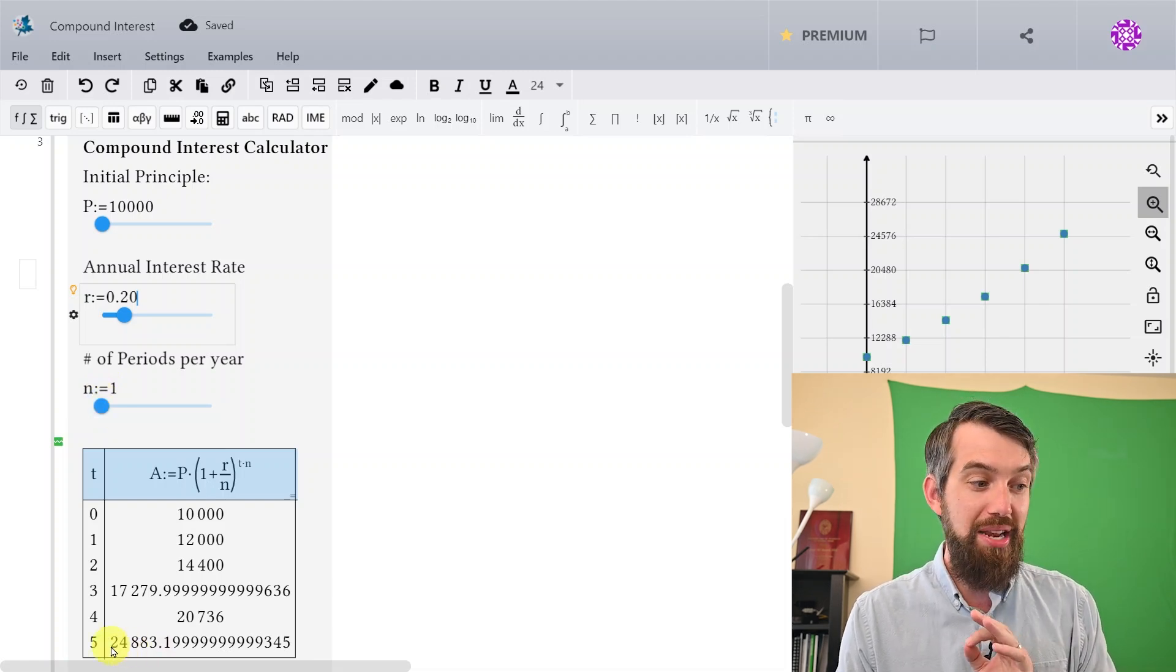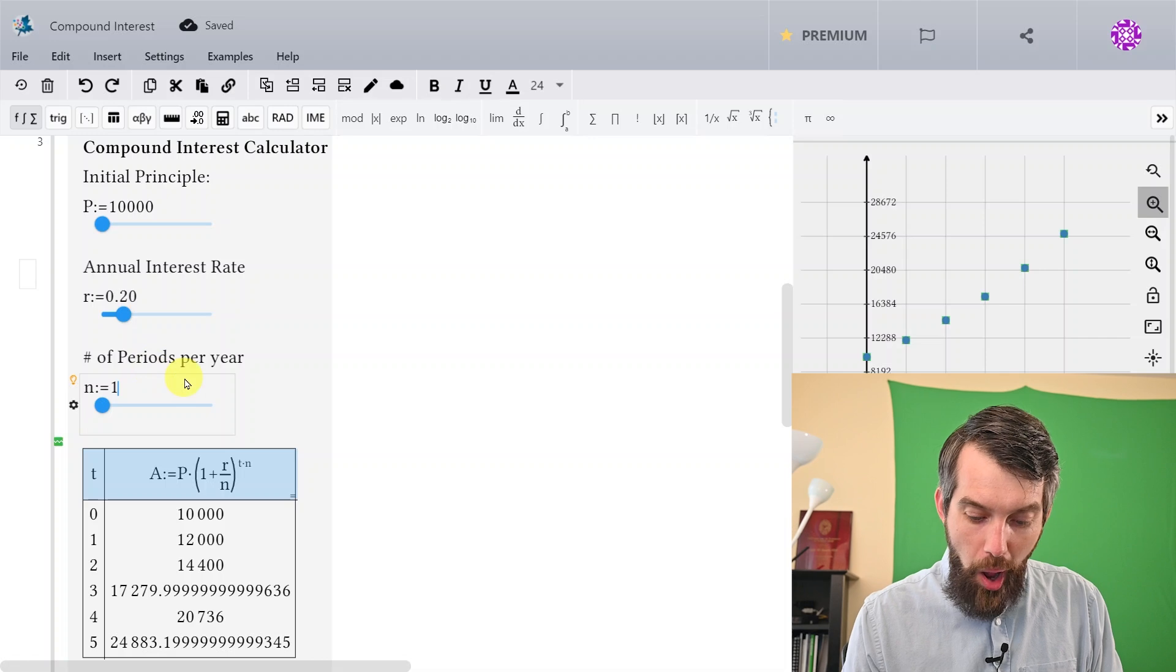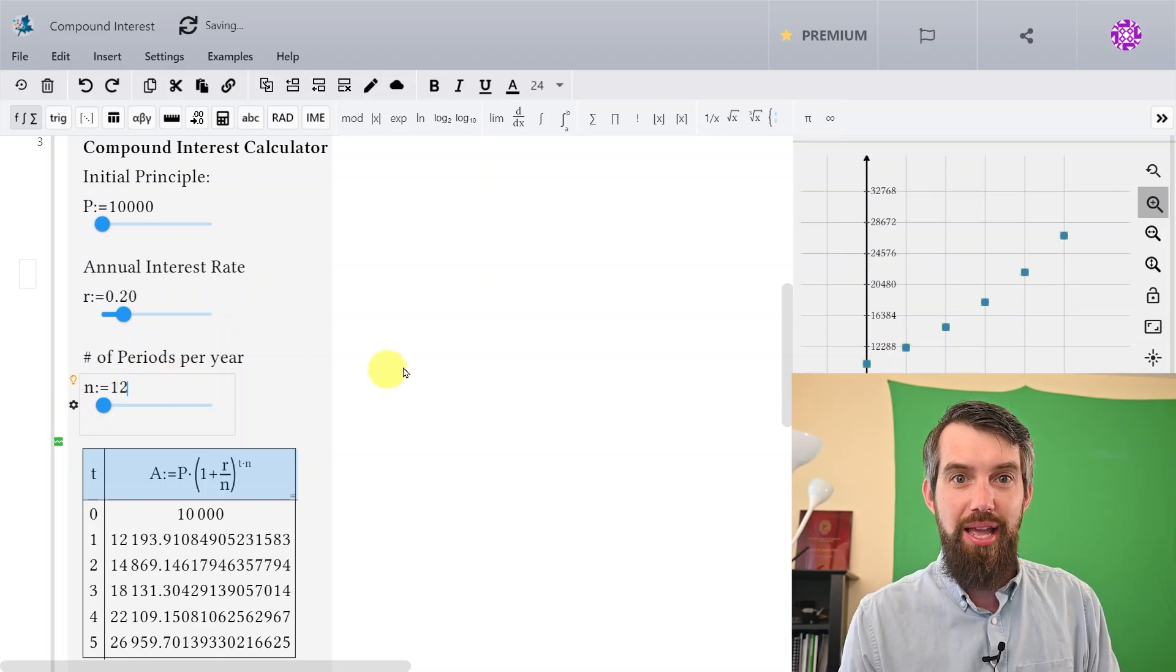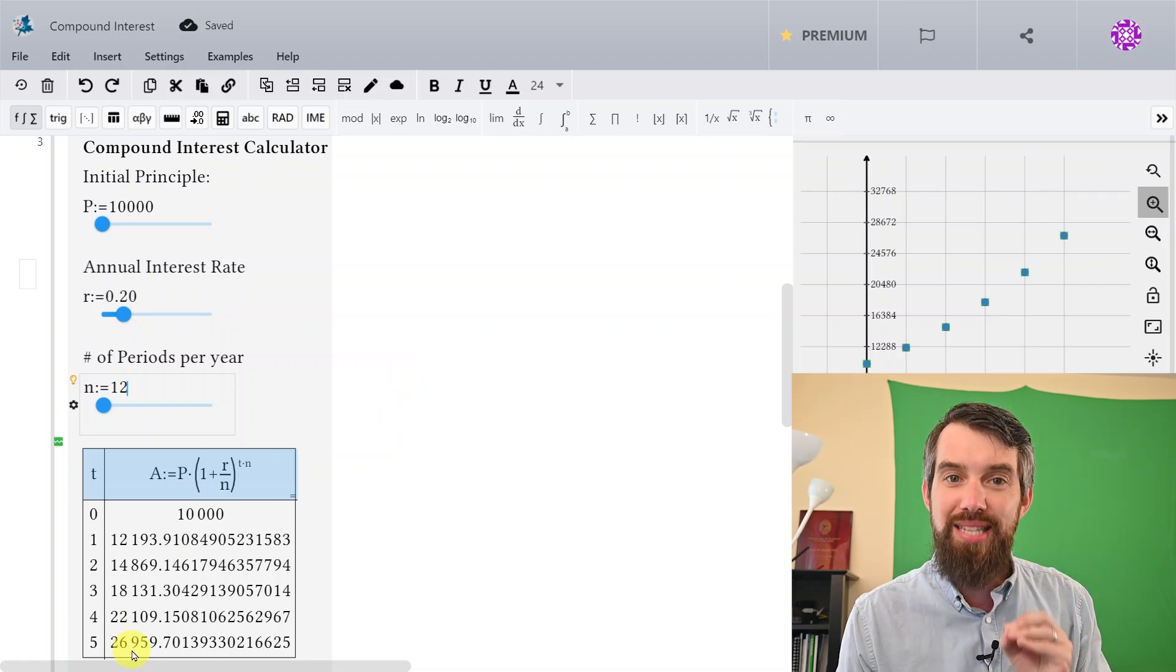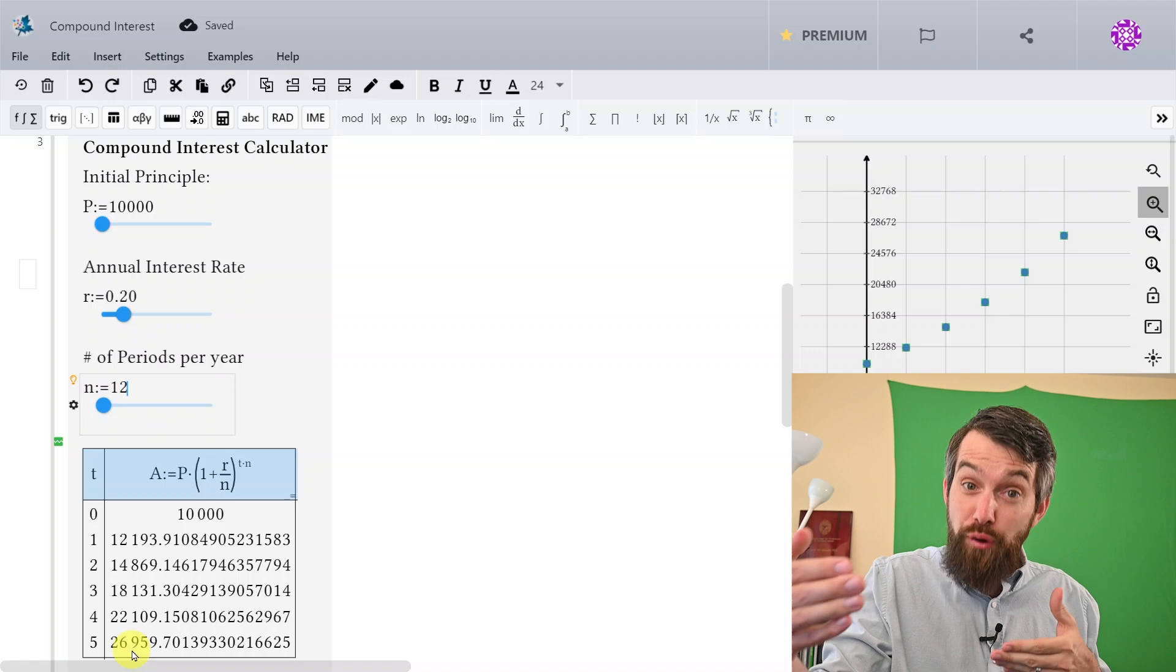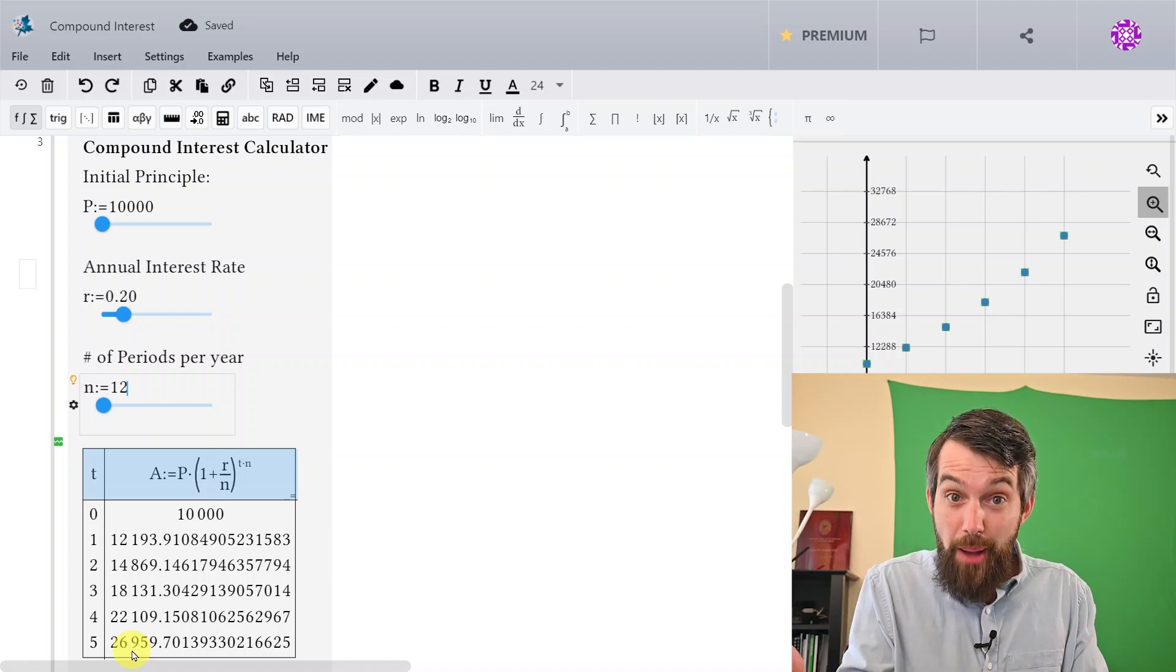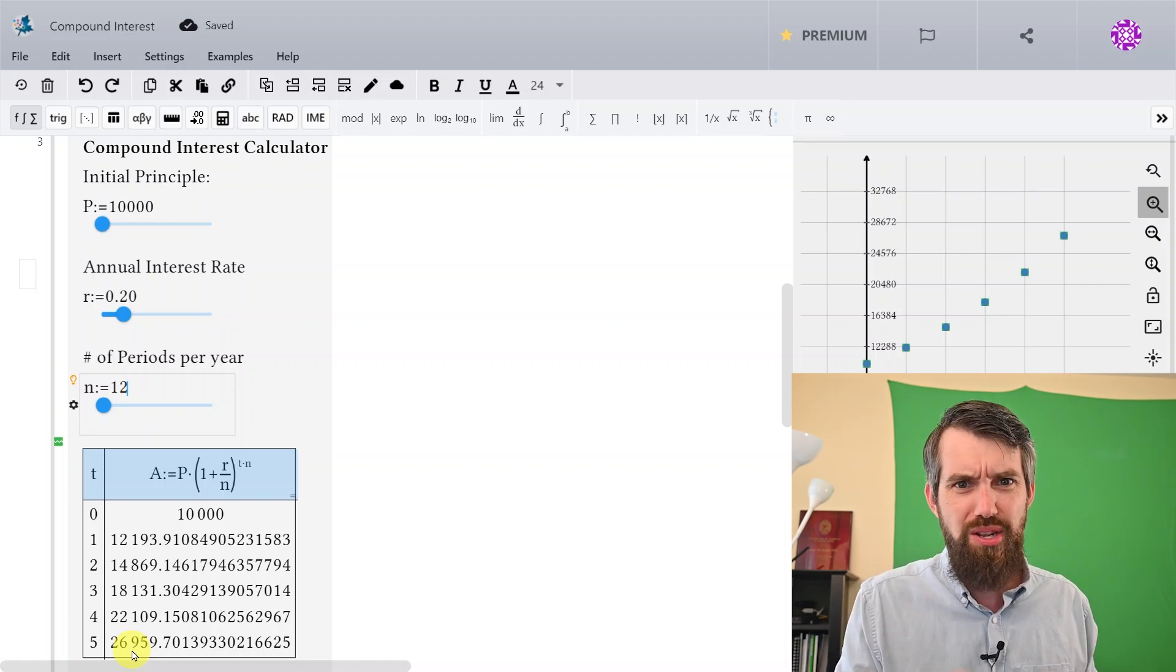Notice that right now, before I increase it, that after 5 years, you'd owe $24,883. If instead of 1, I write 12 here, now it's increased, and after 5 years, you owe almost $27,000. And this shows that when you compound more frequently, the amount of money that you owe goes up at the same interest rate and same initial principal.